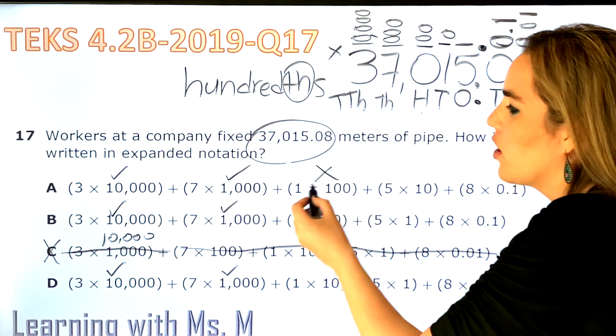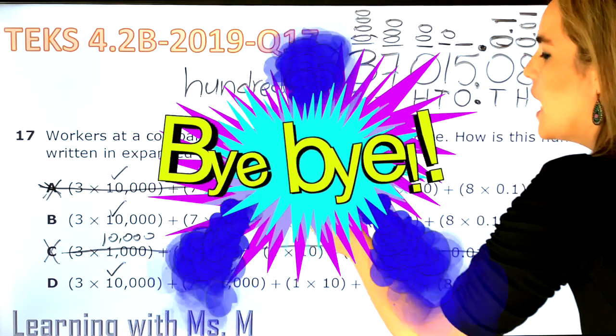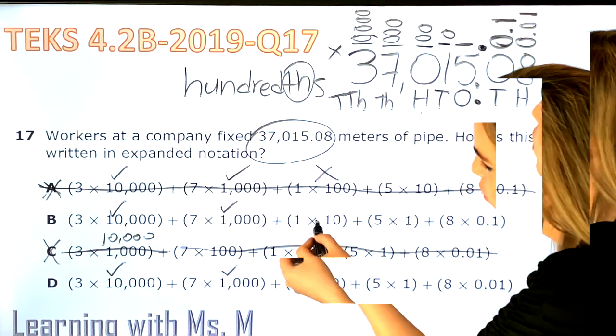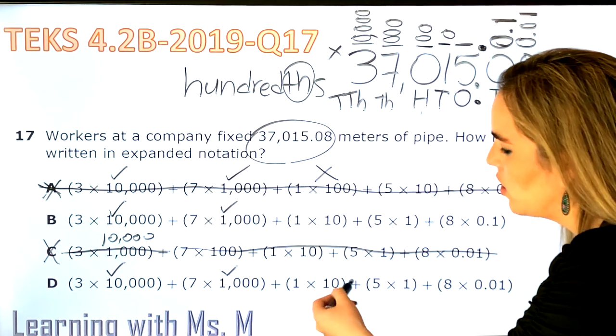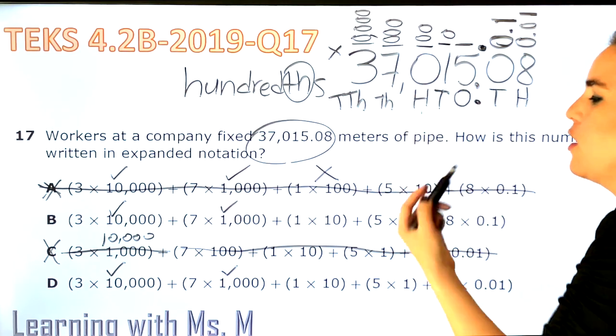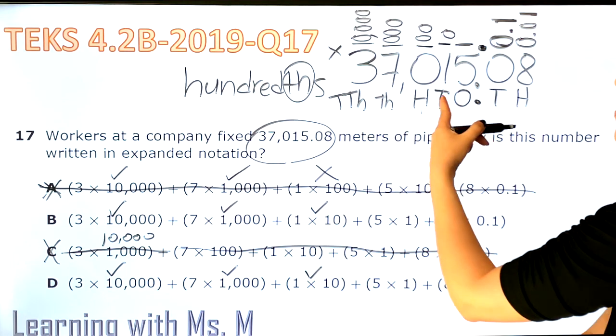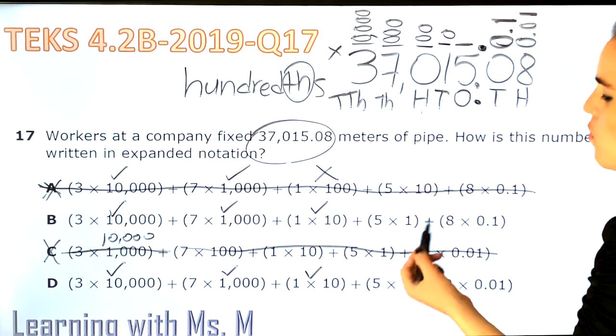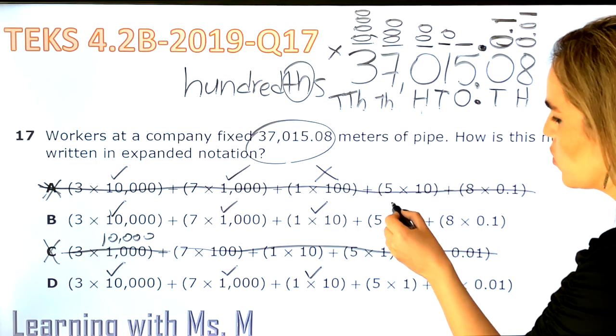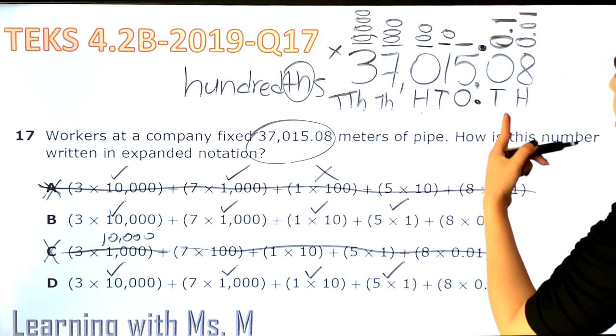Now we have 0 groups of 100. Uh oh, here it says 1 group of 100, so this is wrong. I'm gonna cross out A. Now we don't have anything on the hundreds here, nothing on the hundreds here. Okay. Now we have 1 group of 10, 1 times 10, yes and yes. And then we have 5 groups of 1, 5 times 1, yes, 5 times 1, yes.